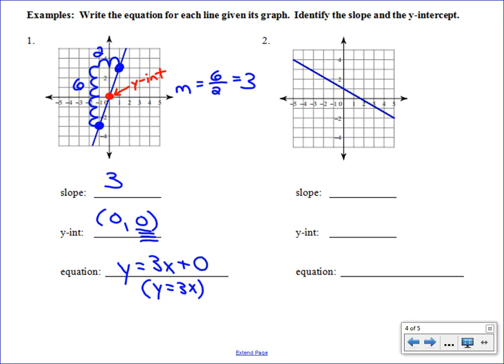We're going to pick out two nice points. So it looks like 0, 1 is a nice point. And 5, negative 2 is another nice point. So we always read from left to right. So I'm going to start at that 0, 1 point. And we're going to count down this time. So our rise is actually a negative 3. Now we're going to count over. And we went to the right 5 units. So that is a positive 5, which makes our slope negative 3 fifths.